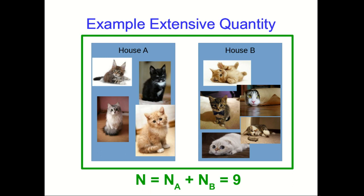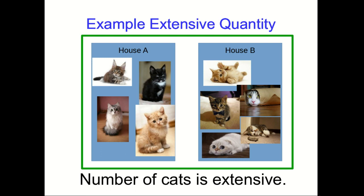And so this is following the rule for an extensive quantity. The number of cats is extensive, because when we combine two systems, the number of cats is just the sum of the number of cats in the individual parts of the system.